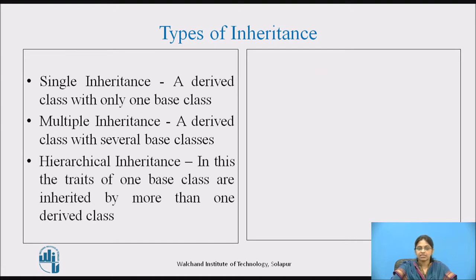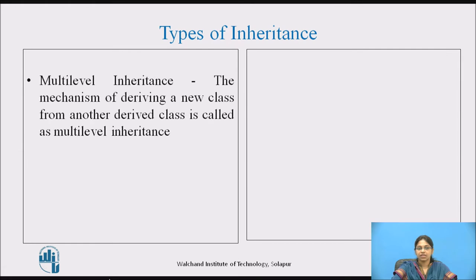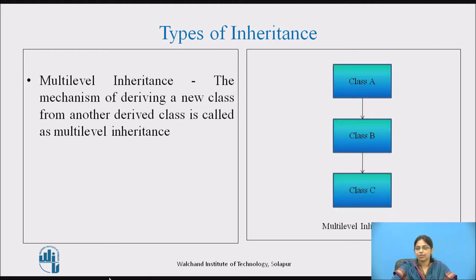Hierarchical inheritance: the features of one base class are inherited by more than one derived class, where from one base class more than one derived class has been derived. Multilevel inheritance: the mechanism of deriving a new class from another derived class. For example, class B is derived from class A, and class C is derived from class B. Class A is the superclass, class B is the intermediate base class, and class C is the derived class. The levels can be increased beyond two.